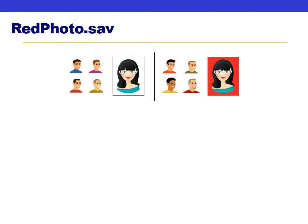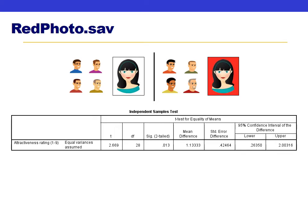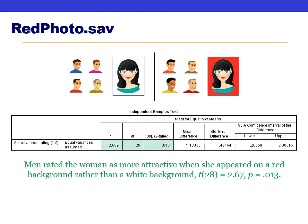Here's an old example: men were shown a photo of a woman on either a white or red background, and men rated her as more attractive on the red background. When we initially analyzed this with an independent samples t-test, we found a significant difference with a p-value of 0.013 and a t-statistic of 2.67, such that men who saw the red background rated the woman as more attractive.